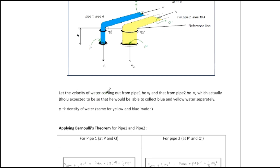Let the velocity of water coming out from pipe 1 be v1 and that from pipe 2 be v2. This is actually what Bholu expected — he expected v1 to be more and v2 to be less, so that he would be able to collect blue and yellow water separately. But let's see what actually happens.